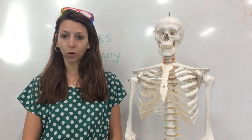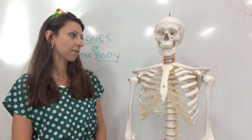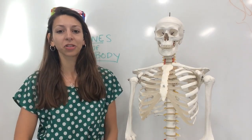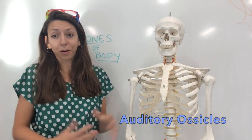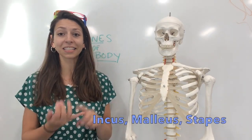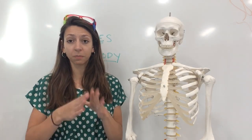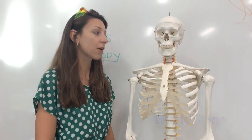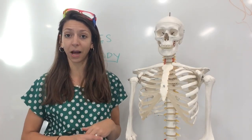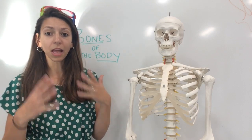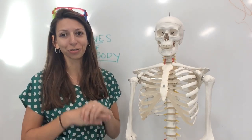The facial skeleton has 14 total bones — it gives shape to the face and provides attachment sites for the many muscles surrounding it. Our auditory ossicles include some of the smallest bones in the body: the incus, the malleus, and the stapes. Within the auditory ossicles, we have six bones total, three per ear. The hyoid bone is the only bone that doesn't directly articulate with another bone in the body. It serves as a movable base for the tongue and is horseshoe-shaped.